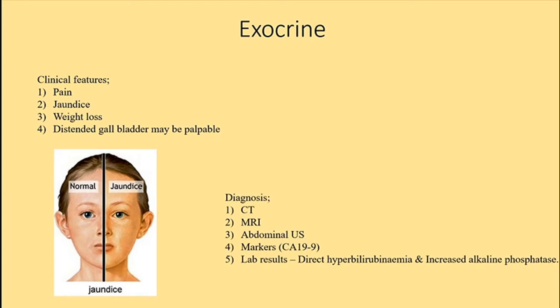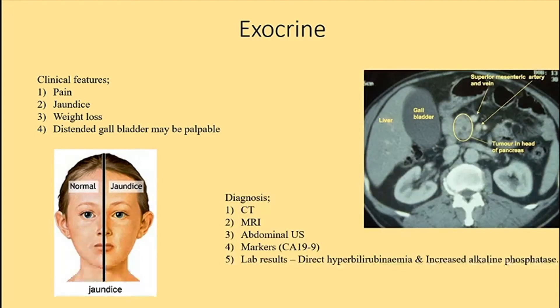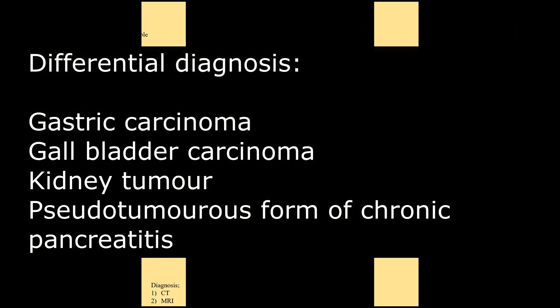For diagnosis, CT is the current standard diagnostic method. You can also do CT-guided laparotomy with biopsy for staging, MRI, elevated serum CA 19-9 which is a tumor biomarker, abdominal ultrasound, and lab tests such as direct hyperbilirubinemia and elevated alkaline phosphatase. Tumors of the body and tail are usually detected late because they lack the obstructive symptoms that bring patients to the doctor.